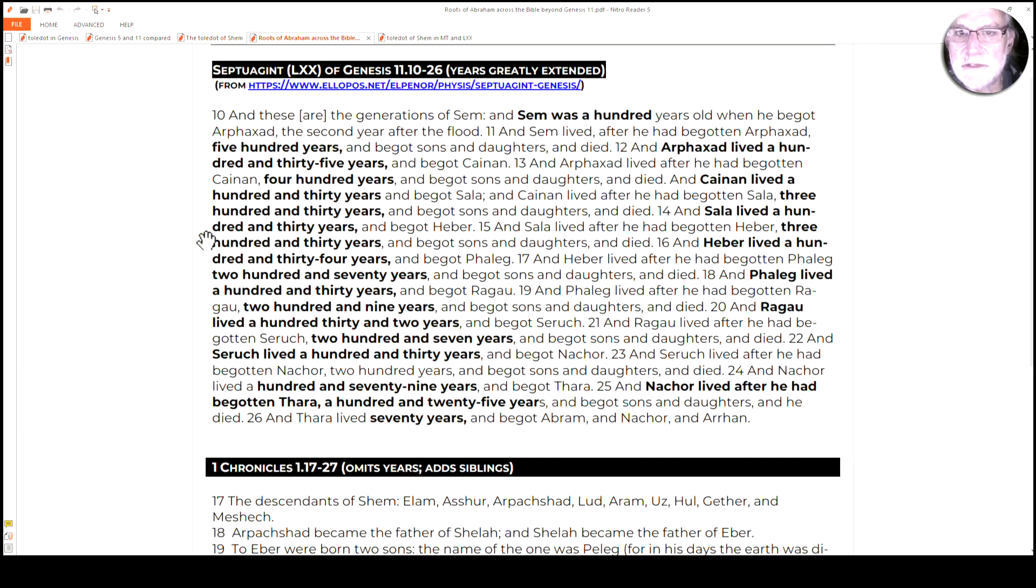Let's look at the other versions of this. So here's the Septuagint version. The one I just showed you is from the Masoretic text. Obviously it's in English, but the Septuagint as my note here has greatly expanded years. So you can see those all here, and I'll show you a chart comparing that in just a moment.